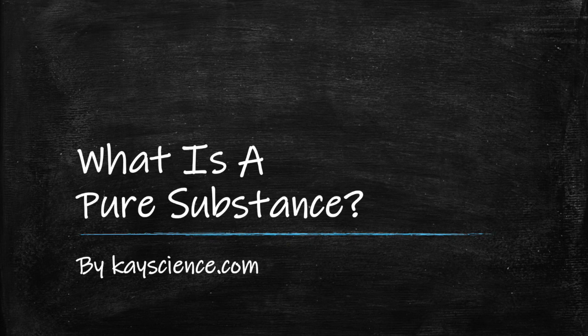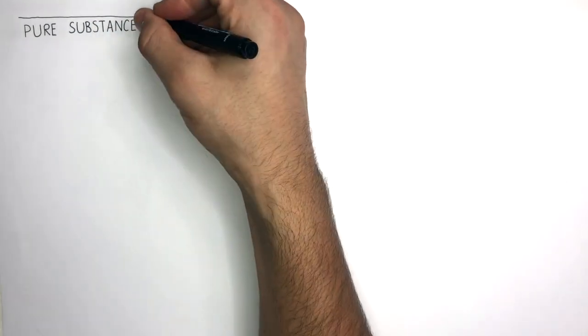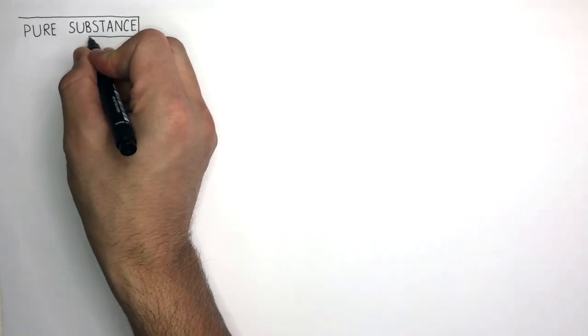What is a pure substance? By kscience.com. A pure substance is an element or compound which has a fixed composition throughout.